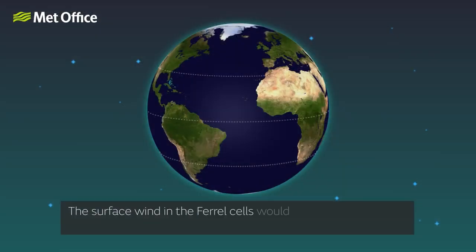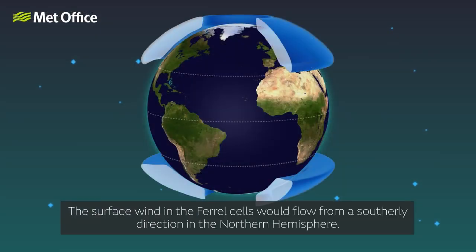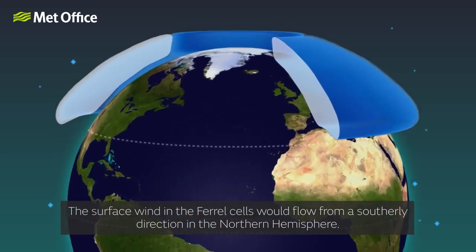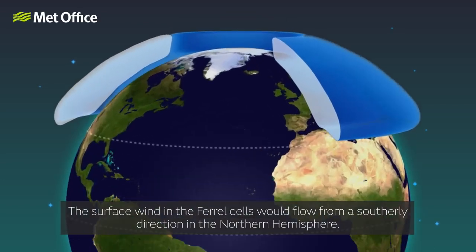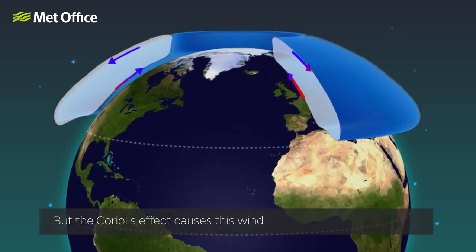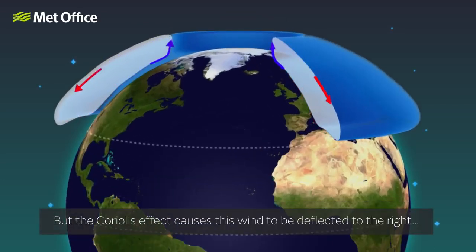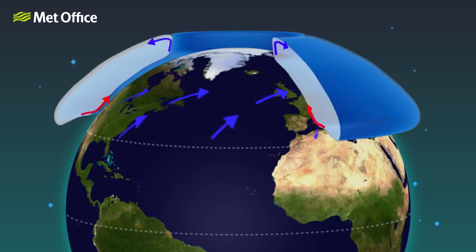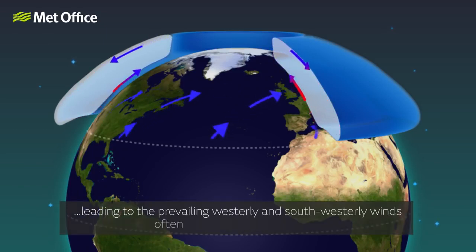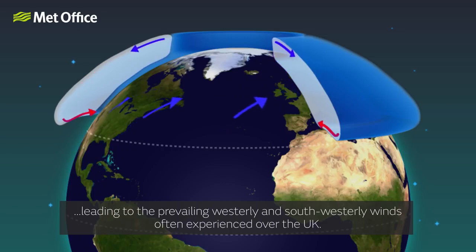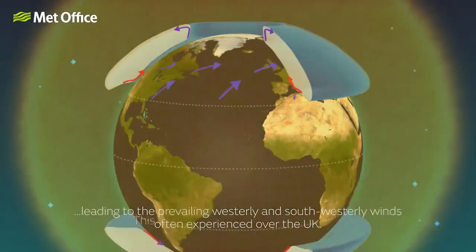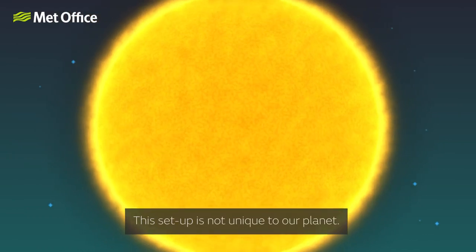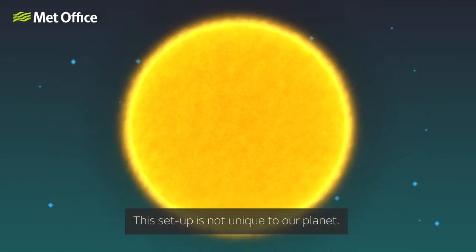The surface wind in the Ferrell cells would flow from a southerly direction in the northern hemisphere, but the Coriolis effect causes this wind to be deflected to the right, leading to the prevailing westerly and southwesterly winds often experienced over the UK. This setup is not unique to our planet.